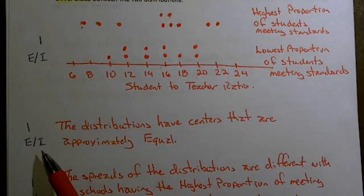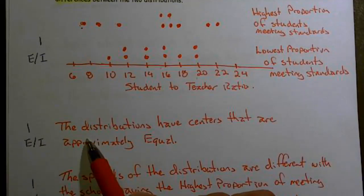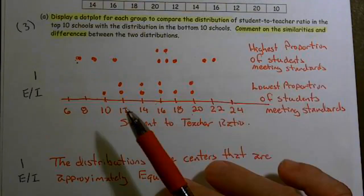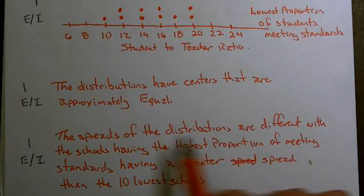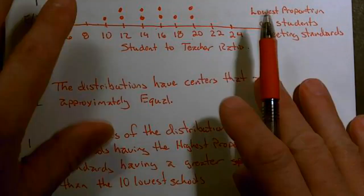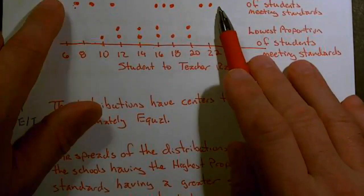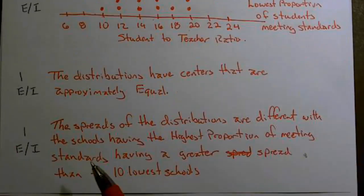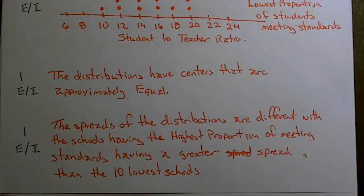It was essentially correct or incorrect. All you needed to do was address the similarities and the differences. The differences could get you another point. The spreads of the distributions are different — when we look at the data, the top 10 schools are substantially more spread out. The spreads of the distributions are different, with the schools having the highest proportion meeting standards having a greater spread than the 10 lowest schools.